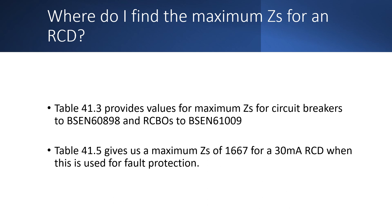If we turn over the page in BS7671 and look at table 41.5, this gives us a maximum ZS of 1667 ohms for a 30 milliamp RCD when this is used for fault protection. So if that's the case, why does table 41.3 say that the maximum ZS for a 32 amp type B RCBO to BS EN 61009 is 1.37 ohms?